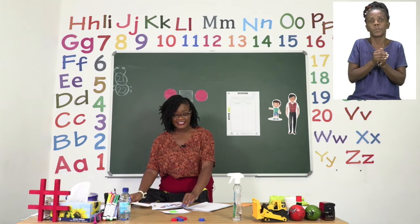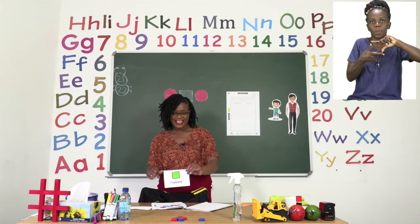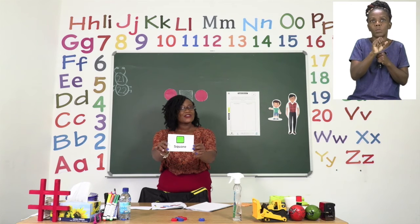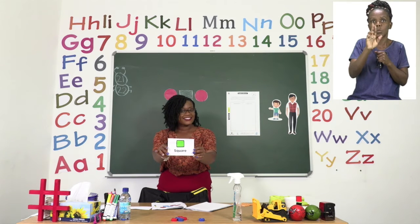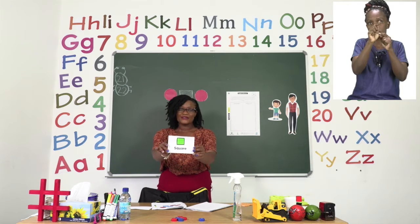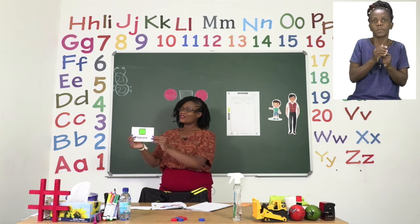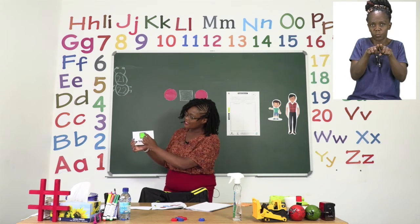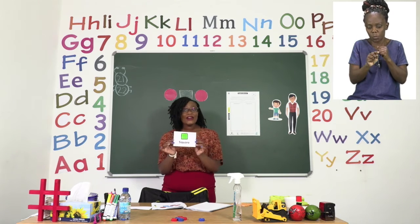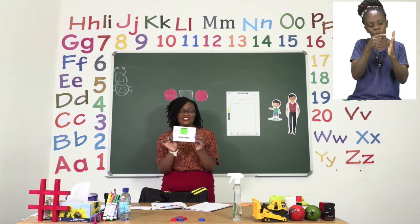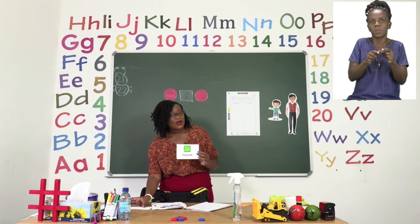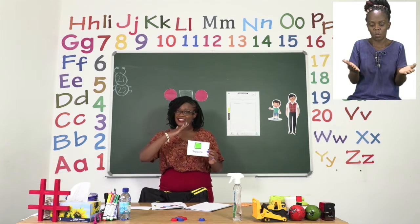The next shape that we can see is a square. Everyone, let's say square. Square. Very good. Now the square actually has four equal sides — one, two, three, four — four equal sides and it is shaped like a box. So it is going to be our job to repeat the pattern.